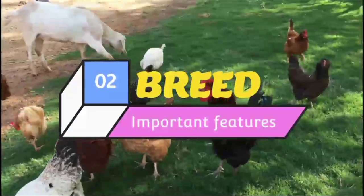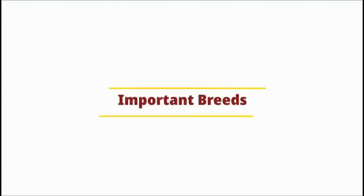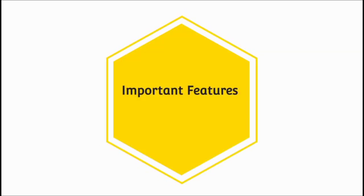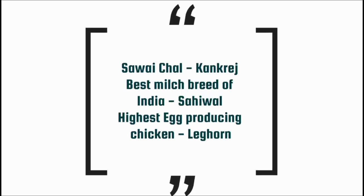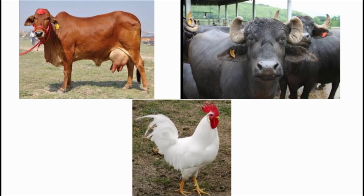The second most important topic is breeds. We are always asked questions about breeds, so you should know the breeds and their classification — ruminants, poultry, monogastric animals, and laboratory animals. For each breed, you must know some important features. Questions are frequently asked about the highest milk-producing cattle, the highest egg-producing poultry, and similar topics. So focus on highest-production breeds and specific character breeds.